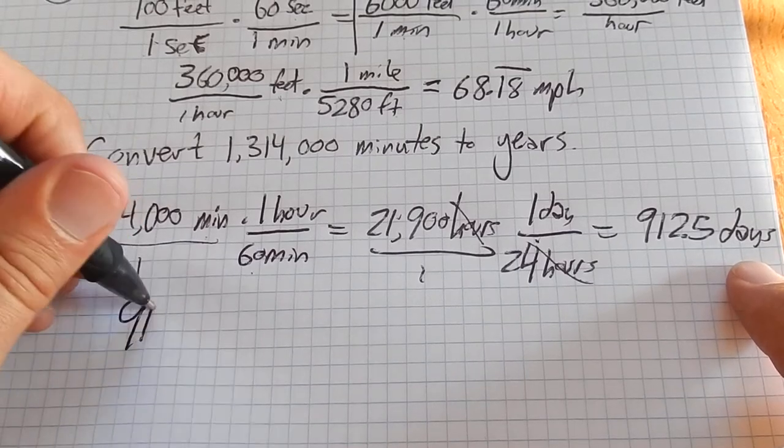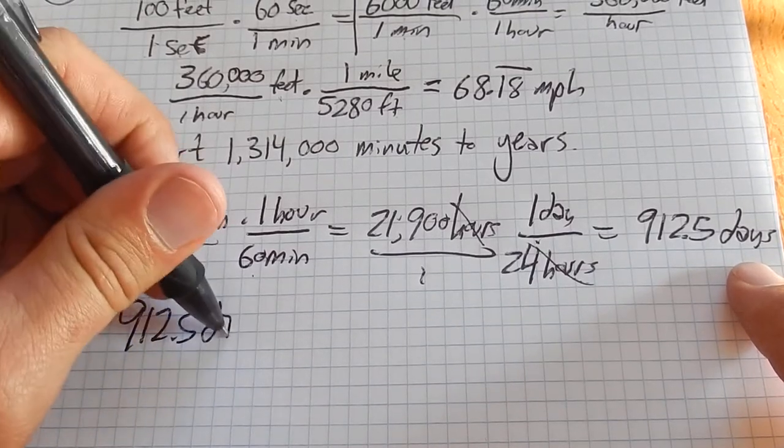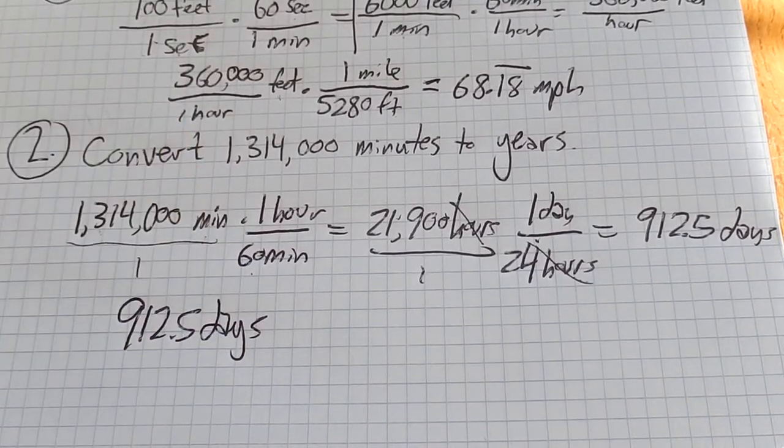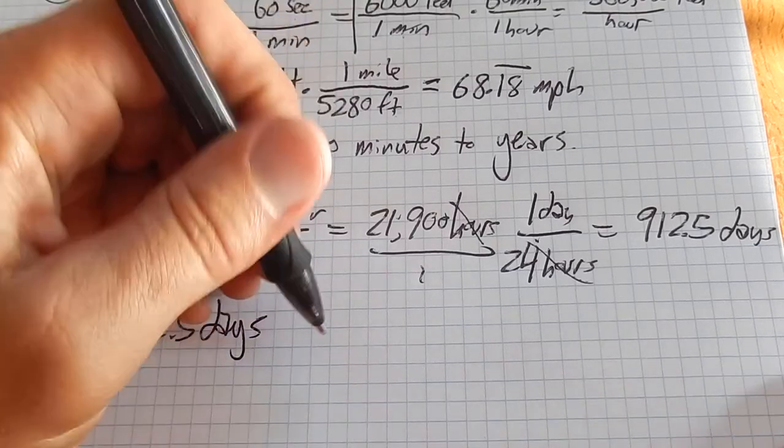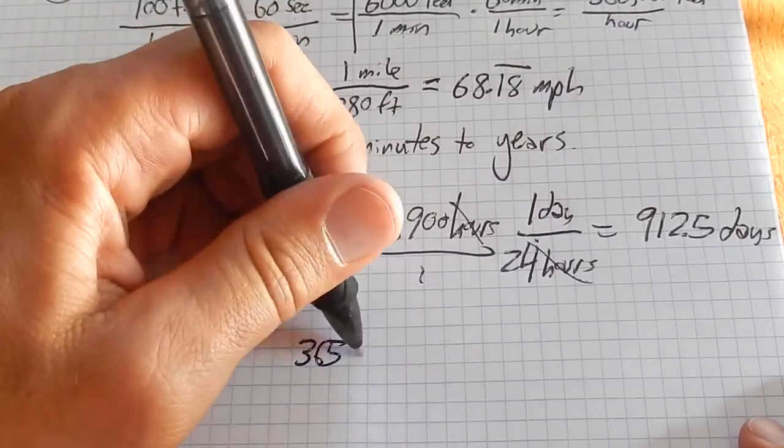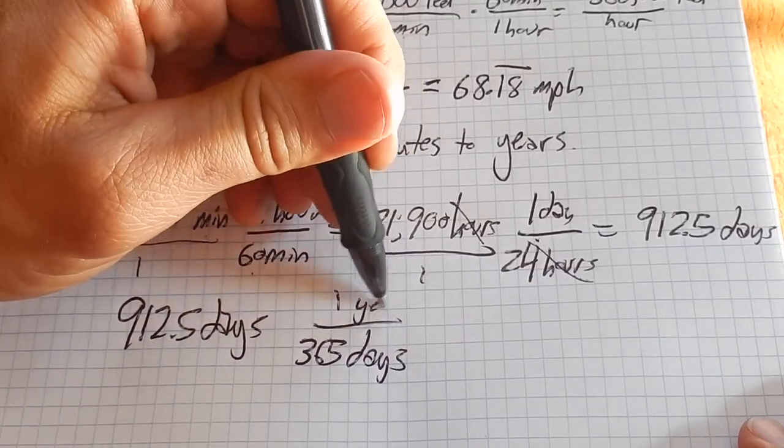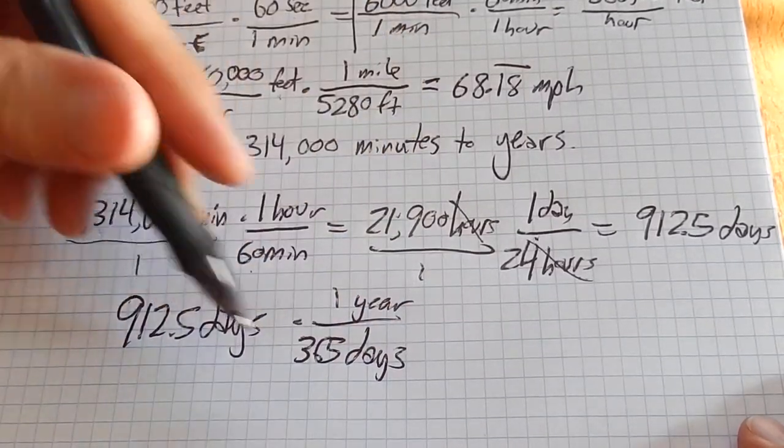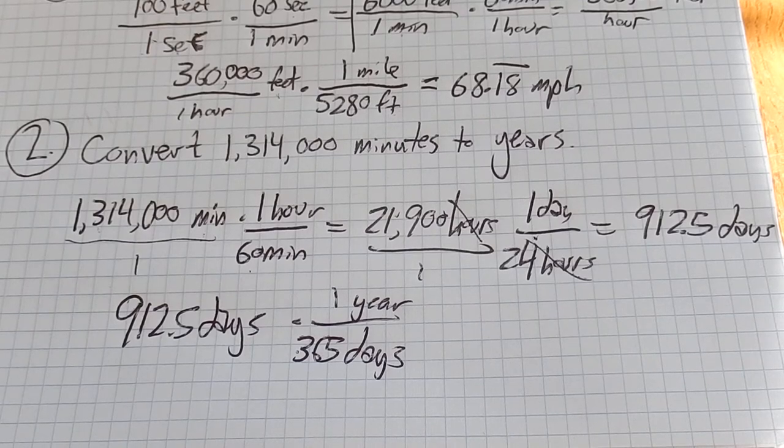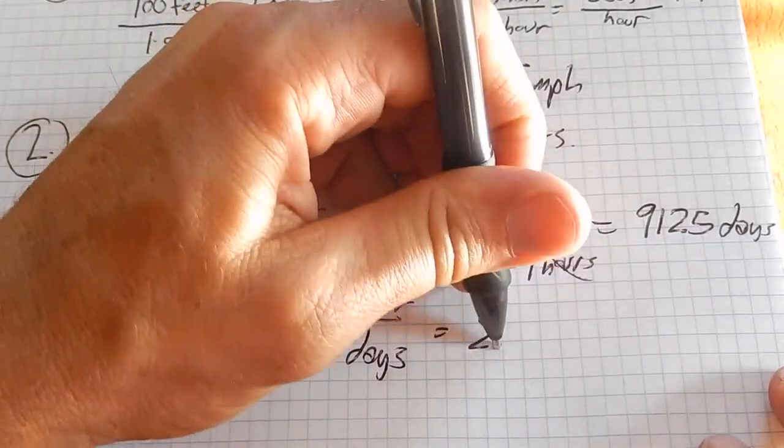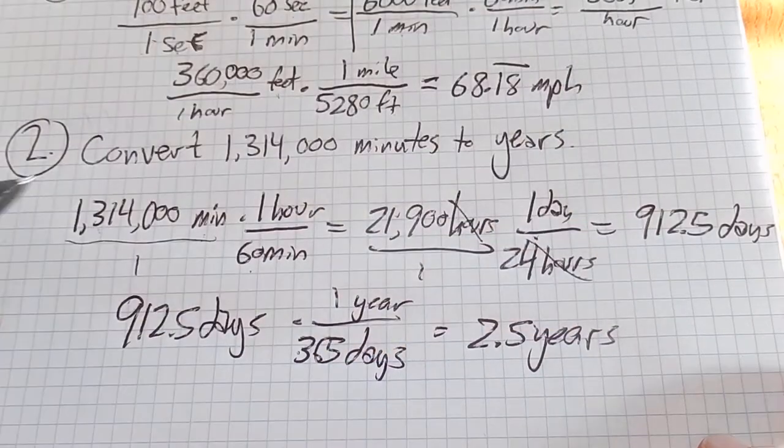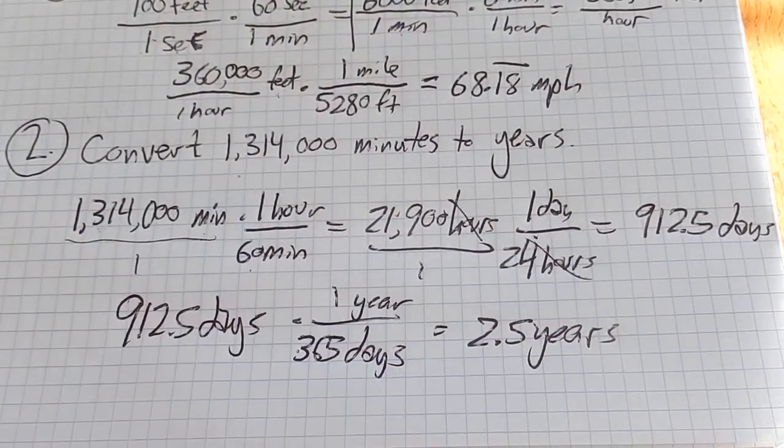Now with that amount, I know that's not exactly 365, but I'm going to say 365 days in one year - that's good enough for our work. So I divide that by 365, grab my calculator, and I get 2.5. So that many minutes is that many years.